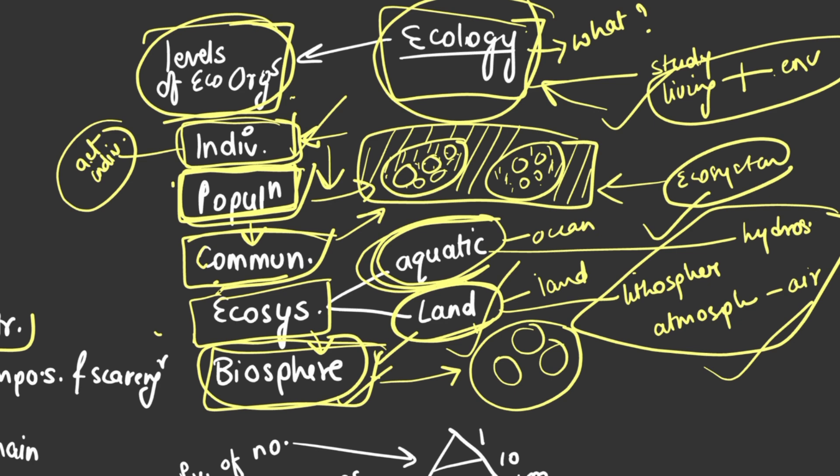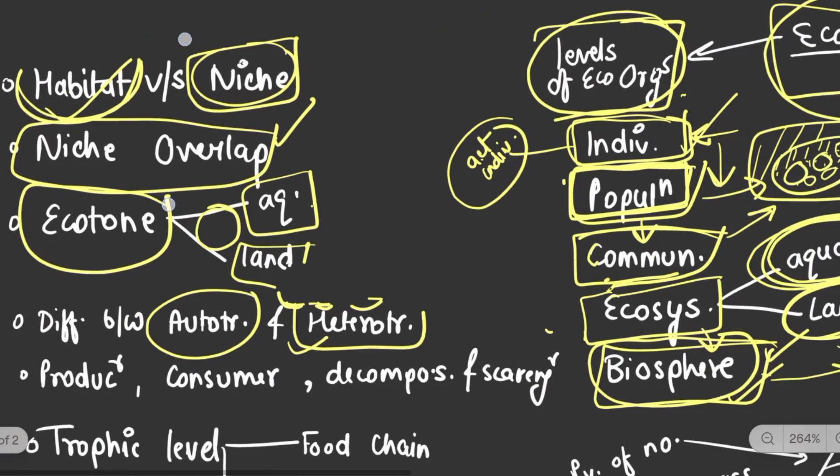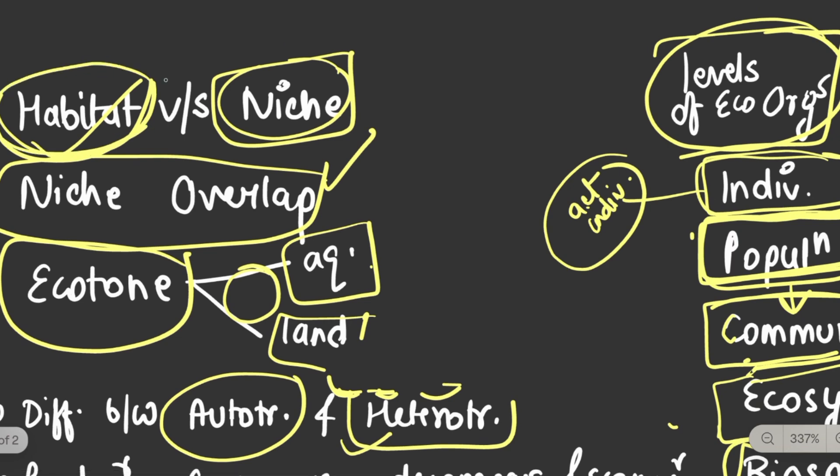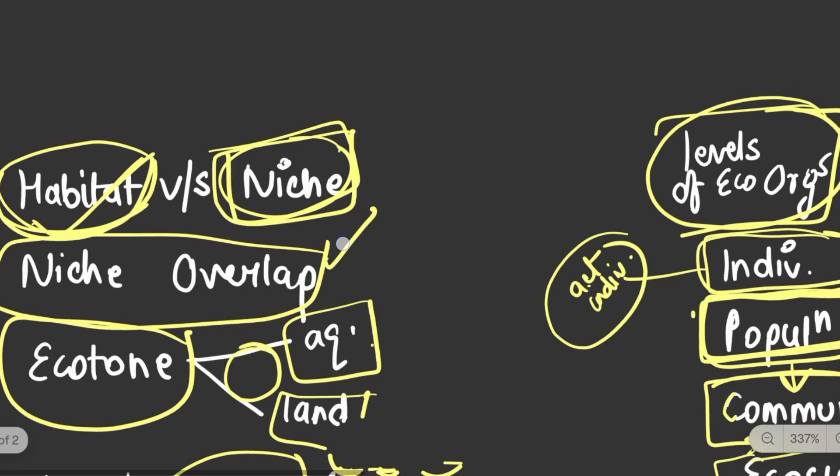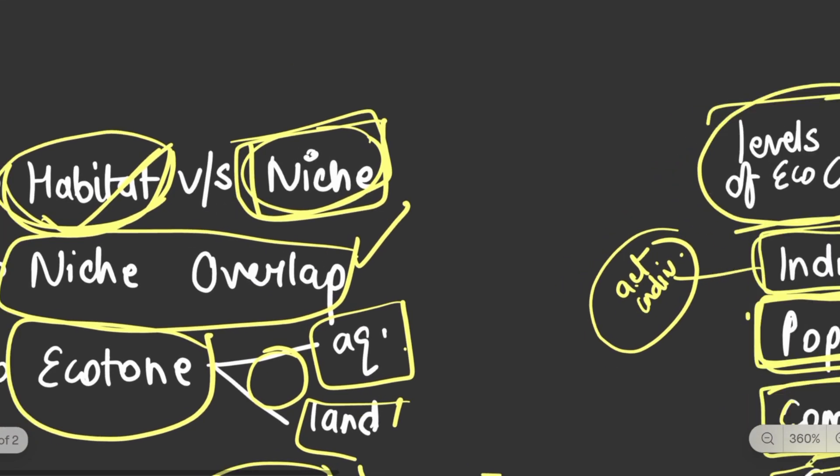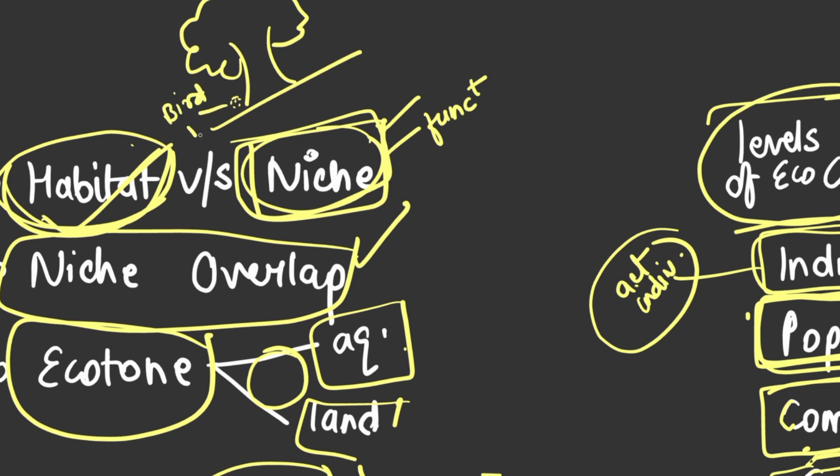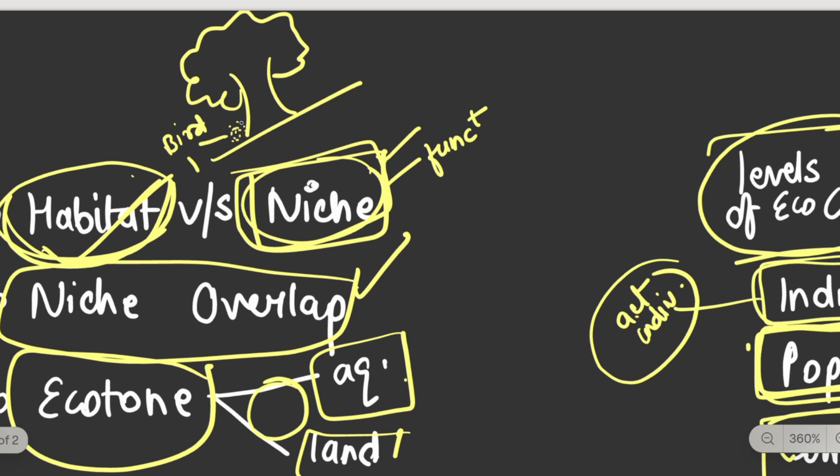Now we will talk about these terms: habitat and niche. Habitat is a place where organisms live - any place where an organism lives, that is habitat. And niche is where the functional activity happens. For example, suppose this is a tree and there are three types of birds.